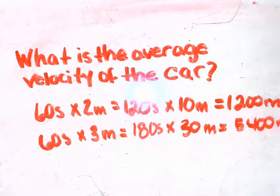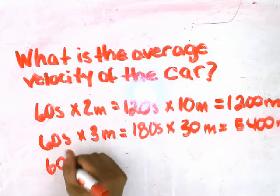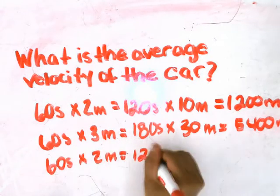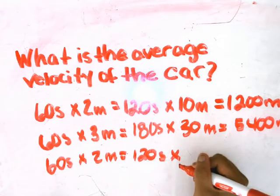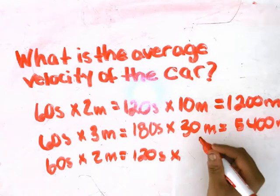Then it says the car turns to the negative x direction at a rate of 20 meters per second for 1 minute. So you're thinking how many seconds are in 1 minute — that's going to be 60 seconds. But this time it says 20 meters per second for 1 minute, so you're going to multiply this by 20.